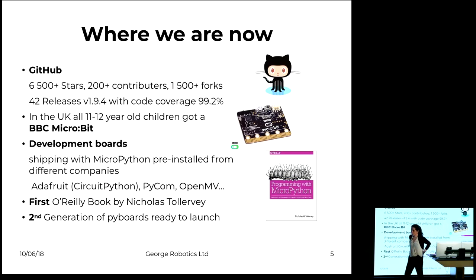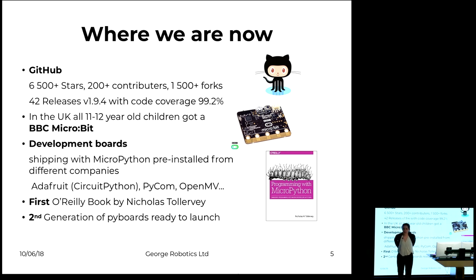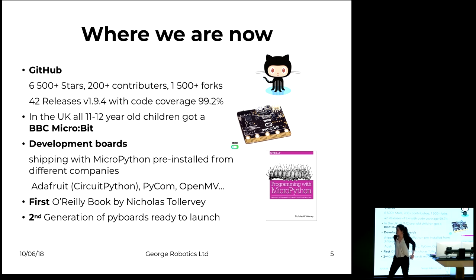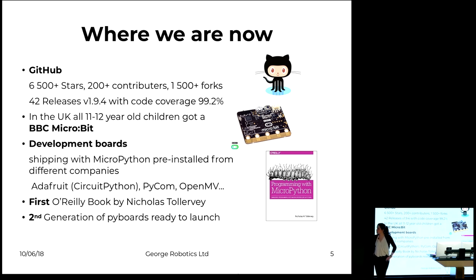MicroPython is an open source project on GitHub, so everybody is more than welcome to contribute. We have about 6,500 stars, ranking in the top 100 of C and C++ projects. In the UK, there was the BBC MicroBit project, where in 2016 all 11-to-12-year-olds got a BBC MicroBit with MicroPython for teaching.